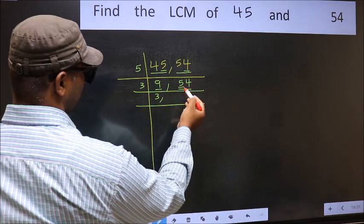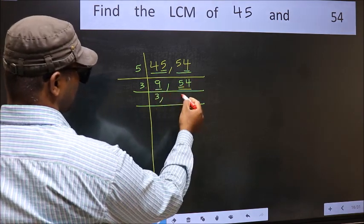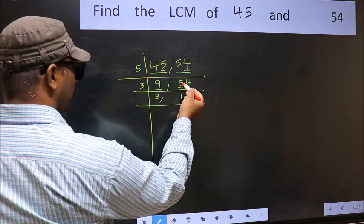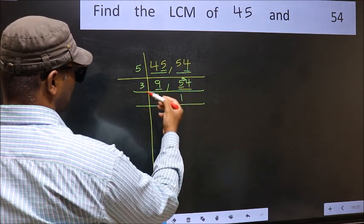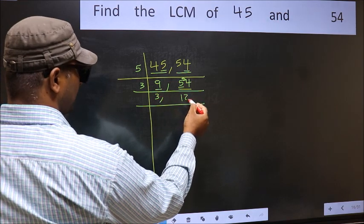First number, 5. A number close to 5 in 3 table is 3, 1 is 3. 5 minus 3, 2. 2 carried forward, 24. When do we get 24 in 3 table? 3, 8 is 24.